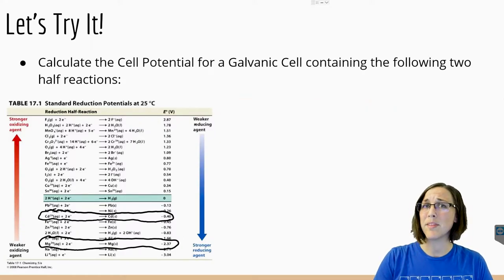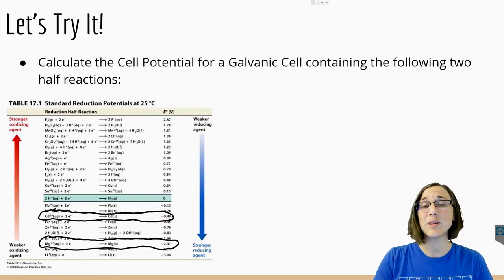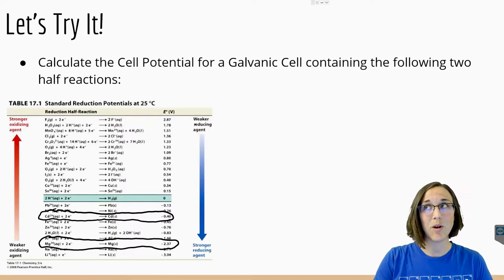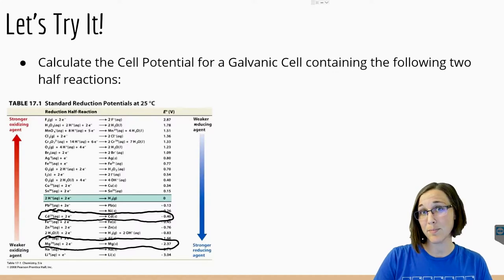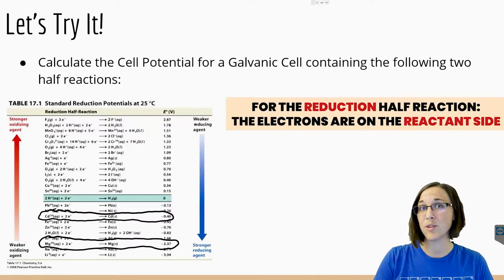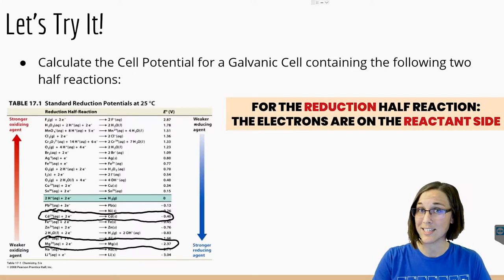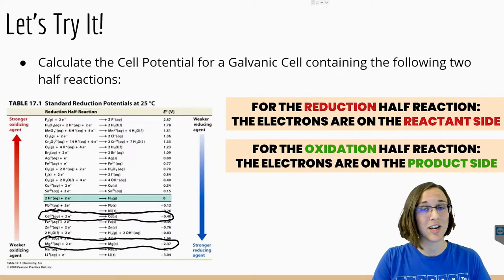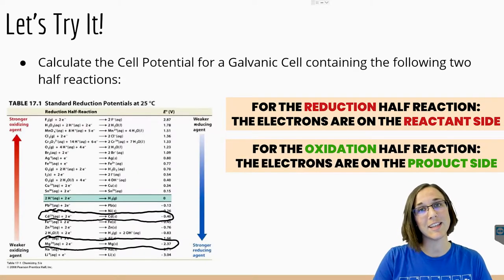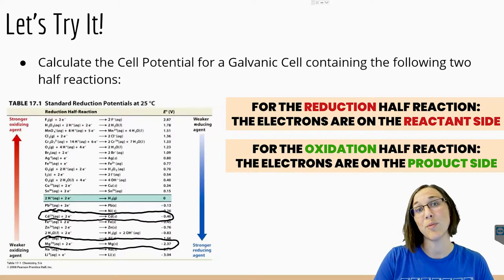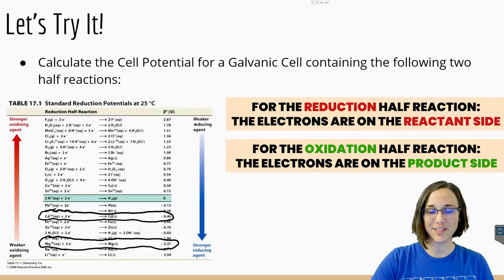Remember that the electrons have to cancel, just as we learned in our half reactions lesson. So the electrons will always have to be on opposite sides. For the reduction half reaction, the electrons are on the reactant side. And for the oxidation half reaction, the electrons are on the product side. So let's give it a try with these two half reactions.